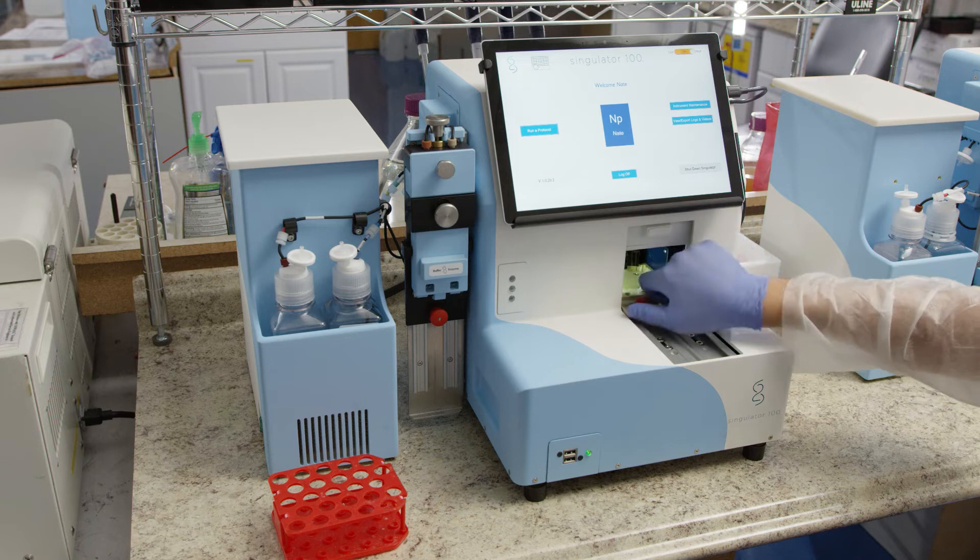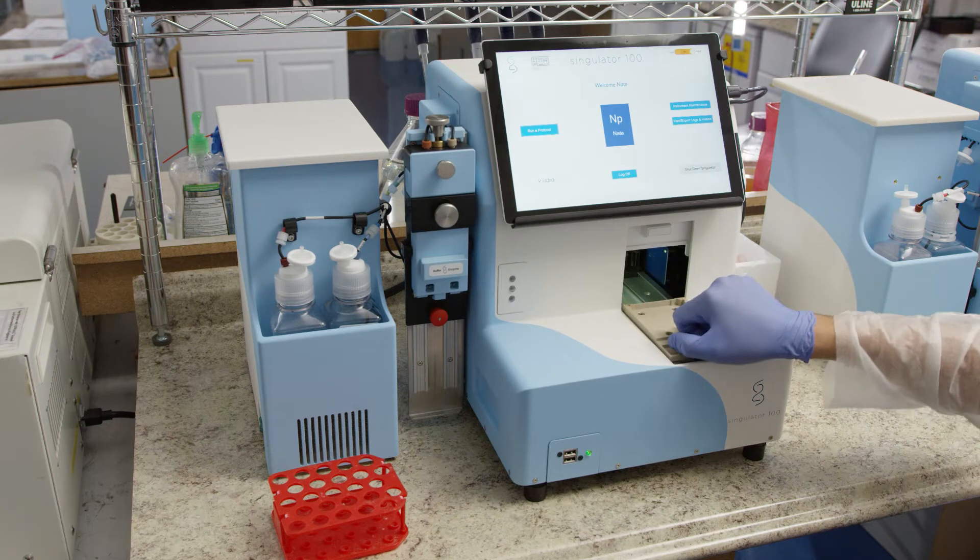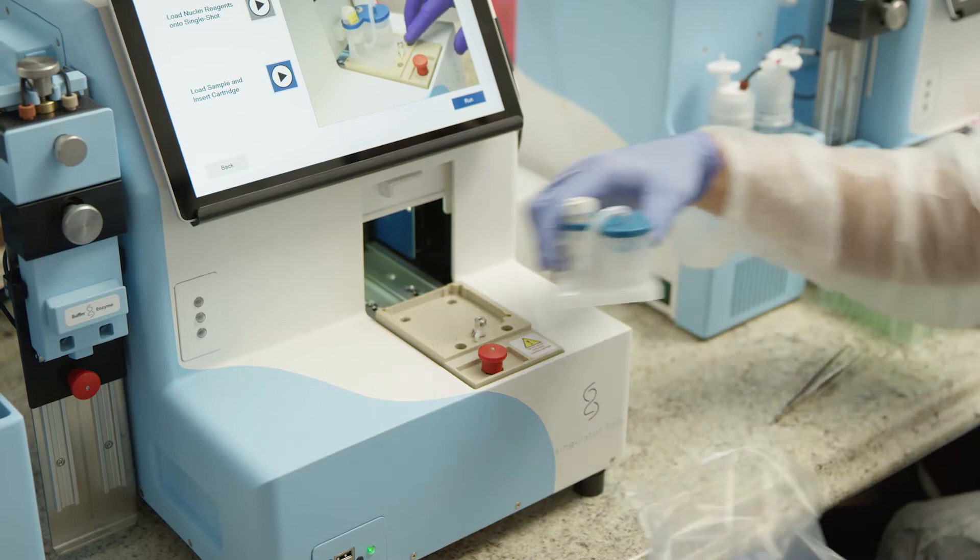When the system has reached temperature, open the door in the front of the Singulator. Lift the red knob to release the sample stage and slide the stage out of the Singulator.